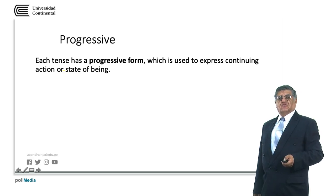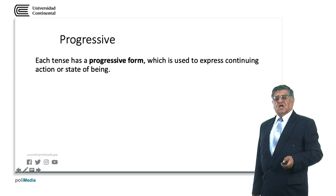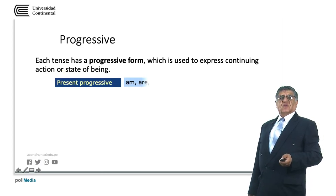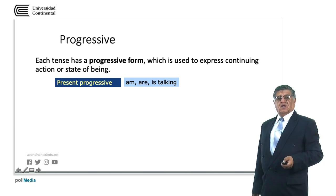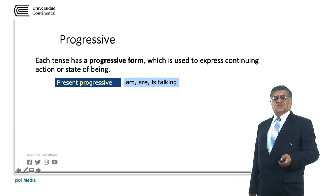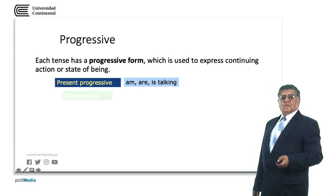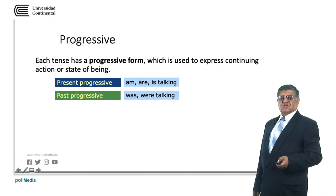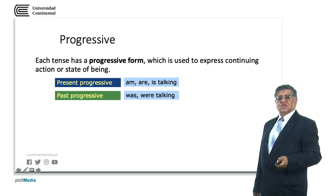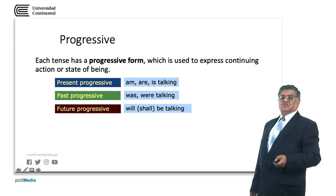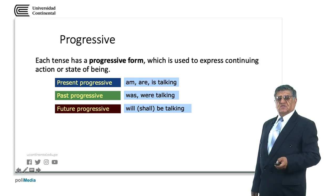Each tense has a progressive or continuous form that gives information about a continuing action or state of being. The present progressive uses the verb to be: is talking — it normally expresses an action happening at the time of speaking. In some cases it expresses a future action. The past progressive also uses the verb to be: was/were talking — the -ing form after the verb to be in the past.